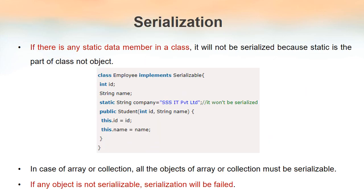If in a class there exists a data member which is static, those members cannot be serialized. Because serialization converts an object into a stream of bytes, and a static member is a member of a class, not of an object. So if there exists any static data member or static method, those members belong to the class, not to an object. Therefore we cannot serialize them, since serialization is converting an object into a stream of bytes.